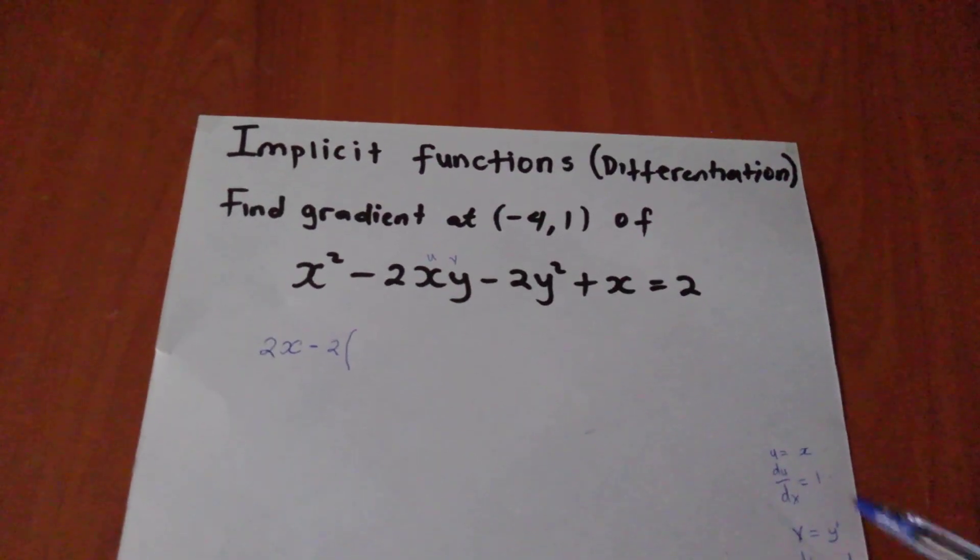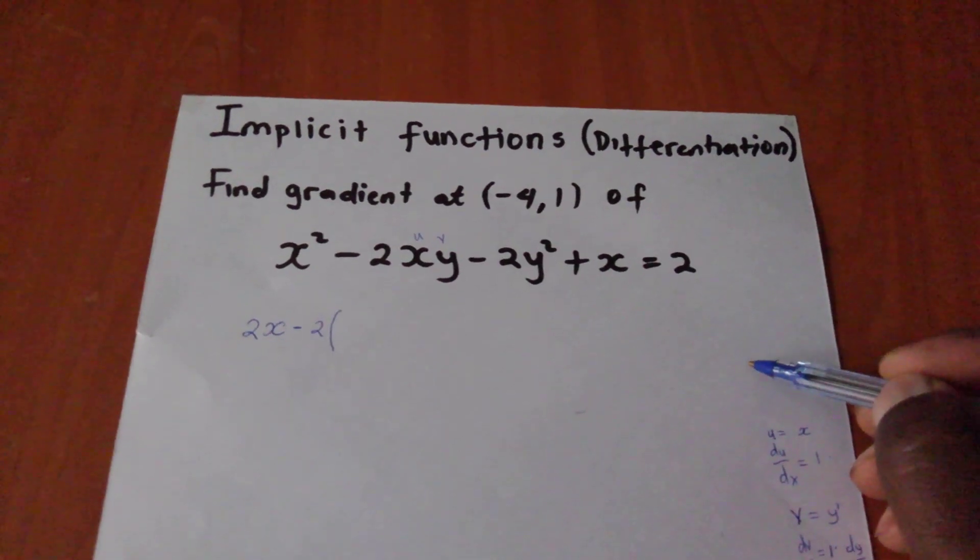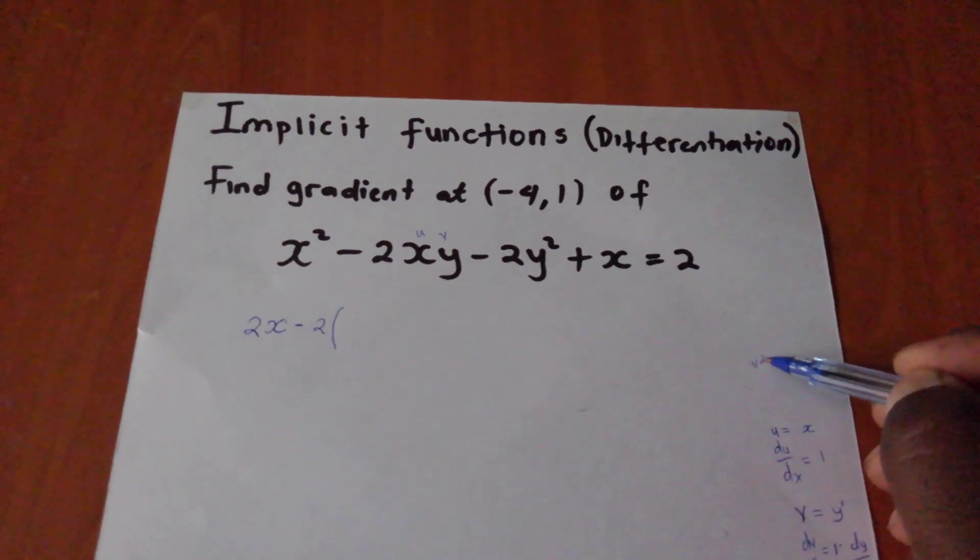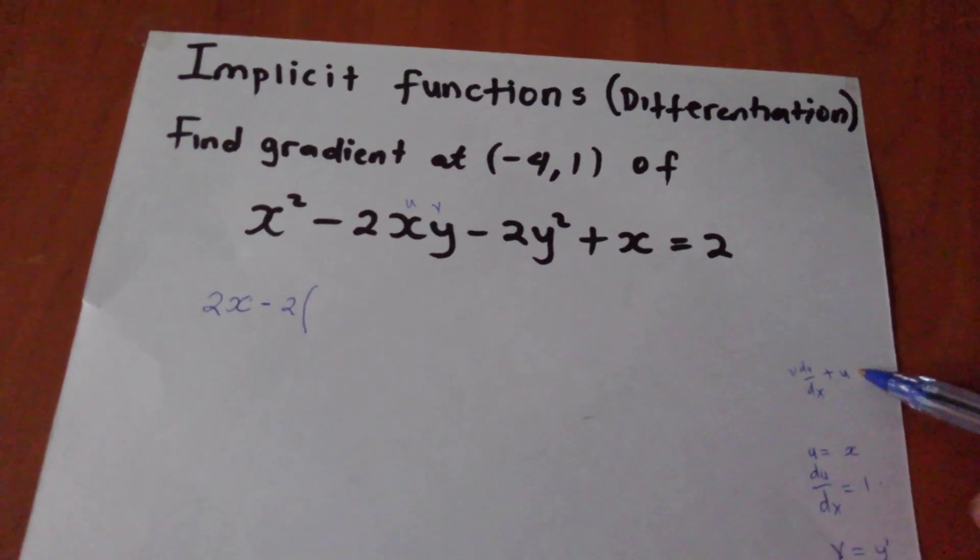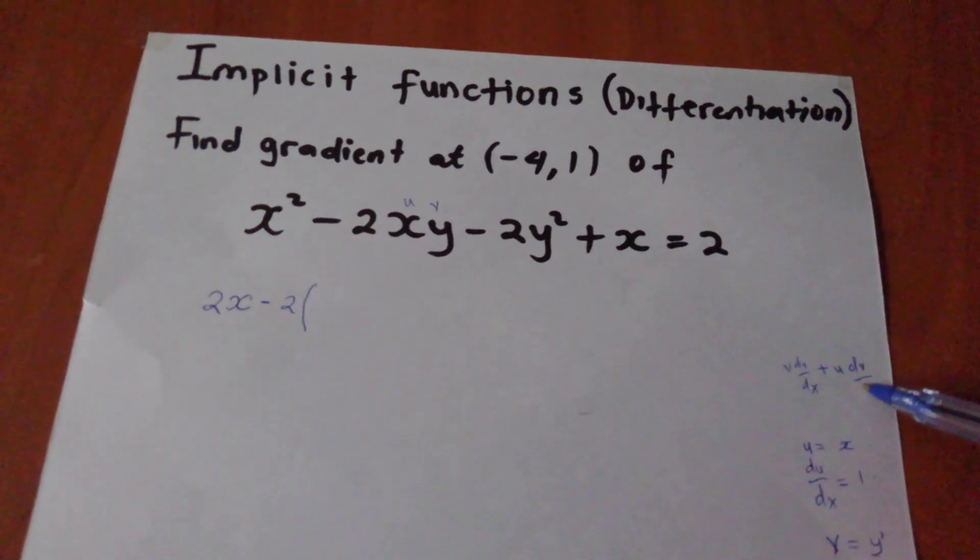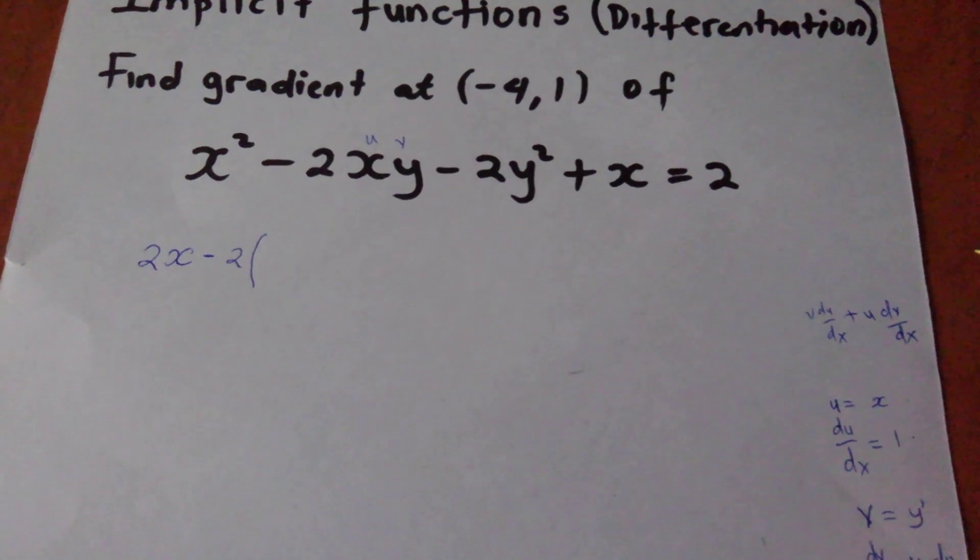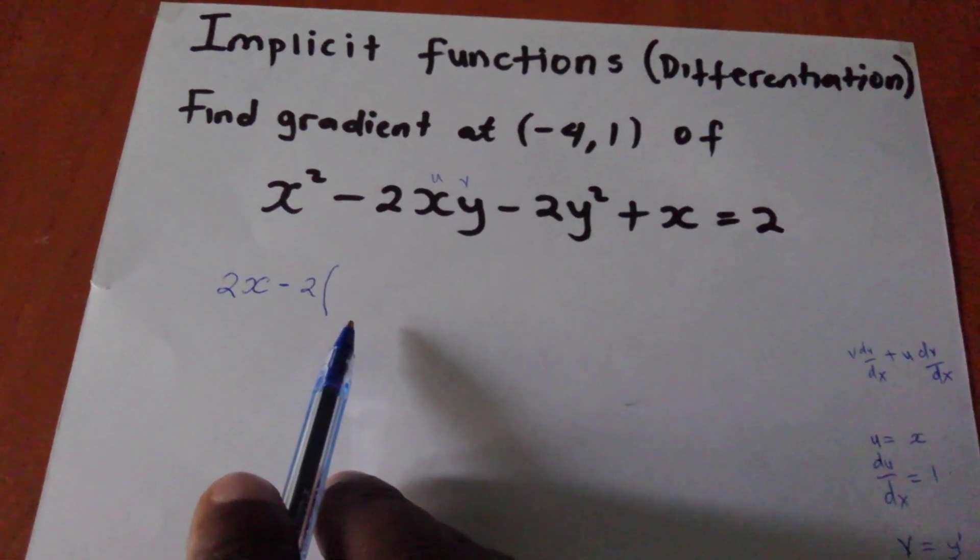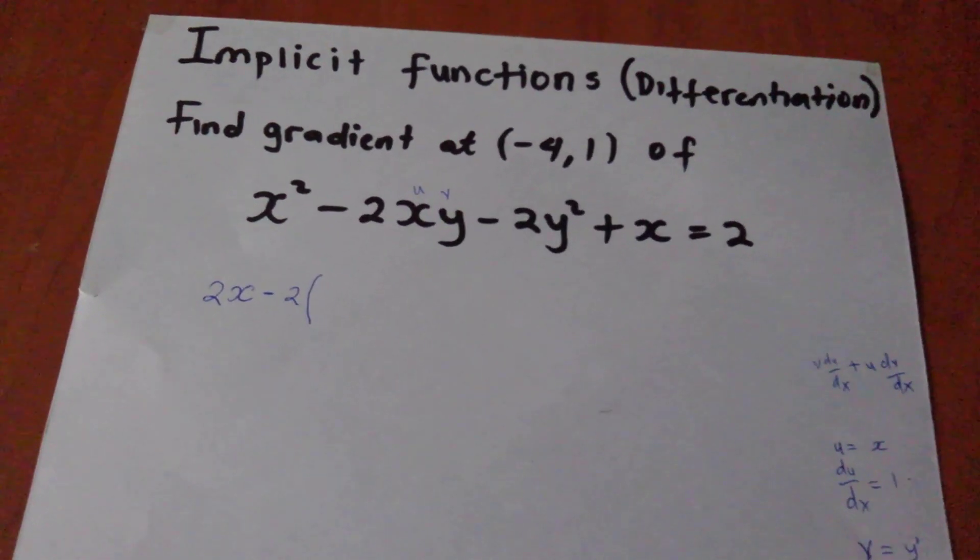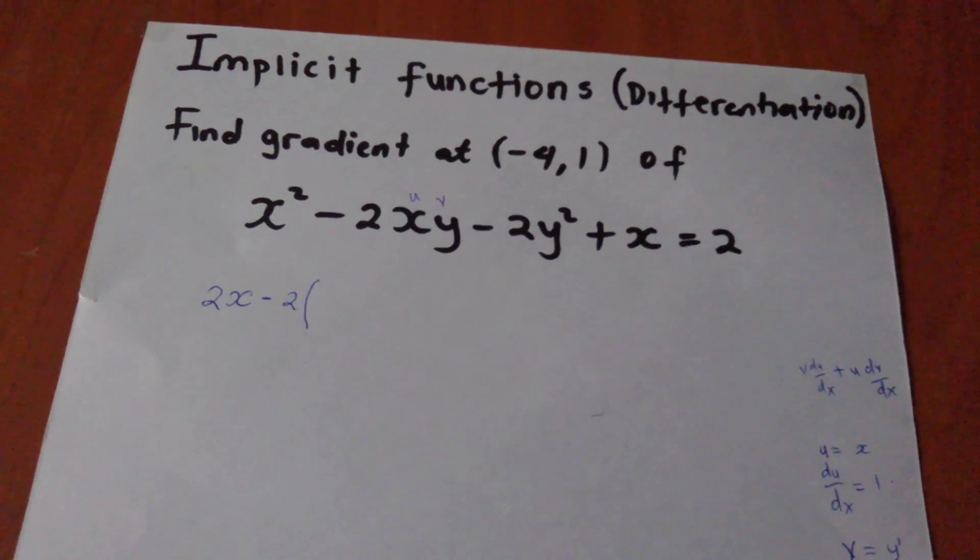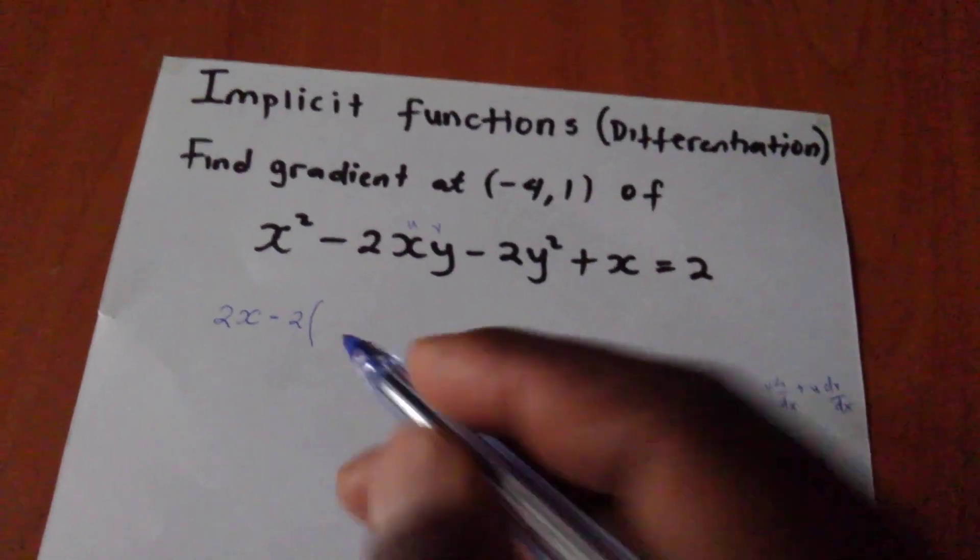So in this case, remember our product rule which says dy dx equals to v du dx plus u dv dx. Hope you still remember that. So we are going to use the same technique in here. So if I look at my expression in here, I will say what is my v. My v was y.